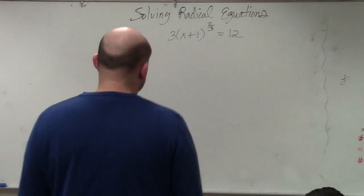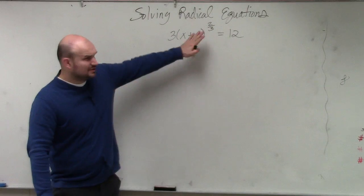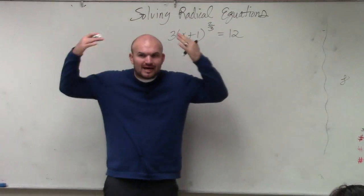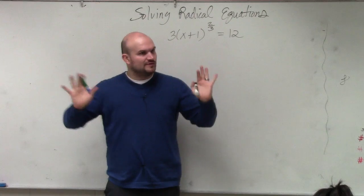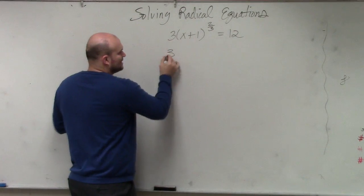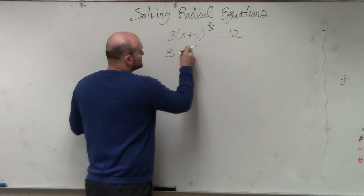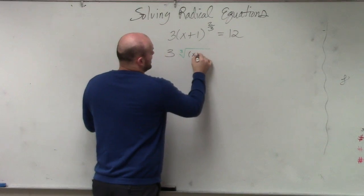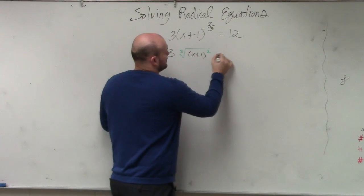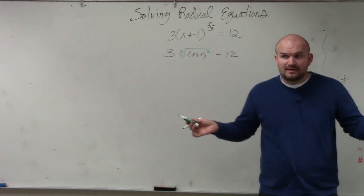Let's go through this problem, because this problem is a little bit different than the last problem. This one, instead of using a radical, it's to a rational power. However, don't let rational powers and radicals confuse you. If you understand one better than the other, what you can simply do is think about this as the cube root of x plus 1 squared equals 12. Isn't that the same thing? It's the same thing.